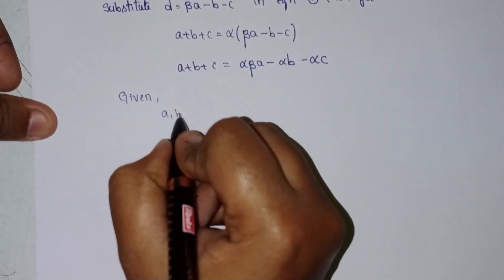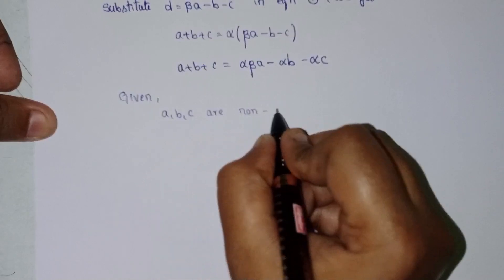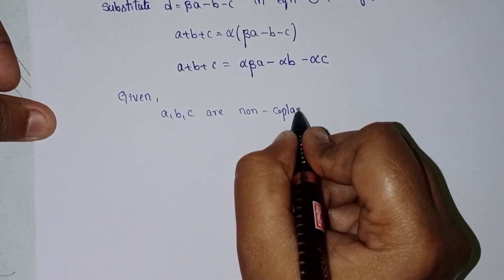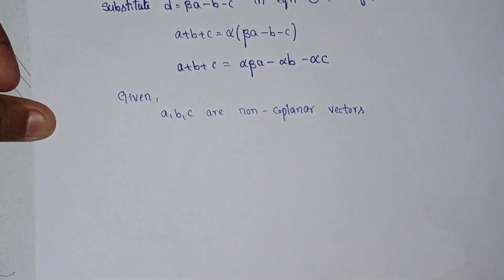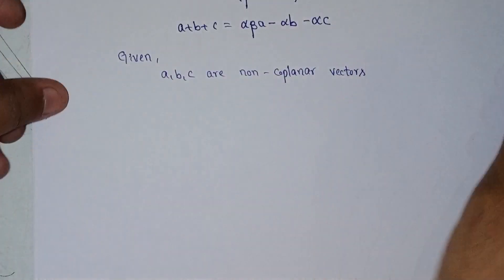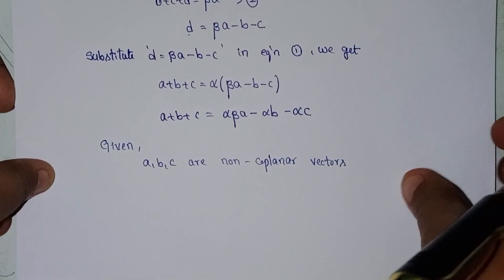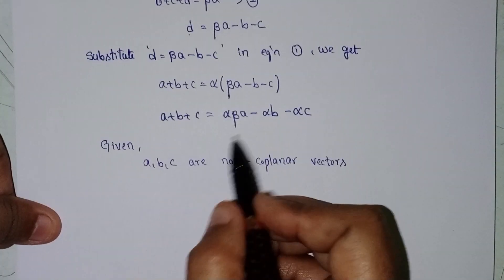Now, a, b, c are non-coplanar vectors, so we compare the coefficients on both sides.